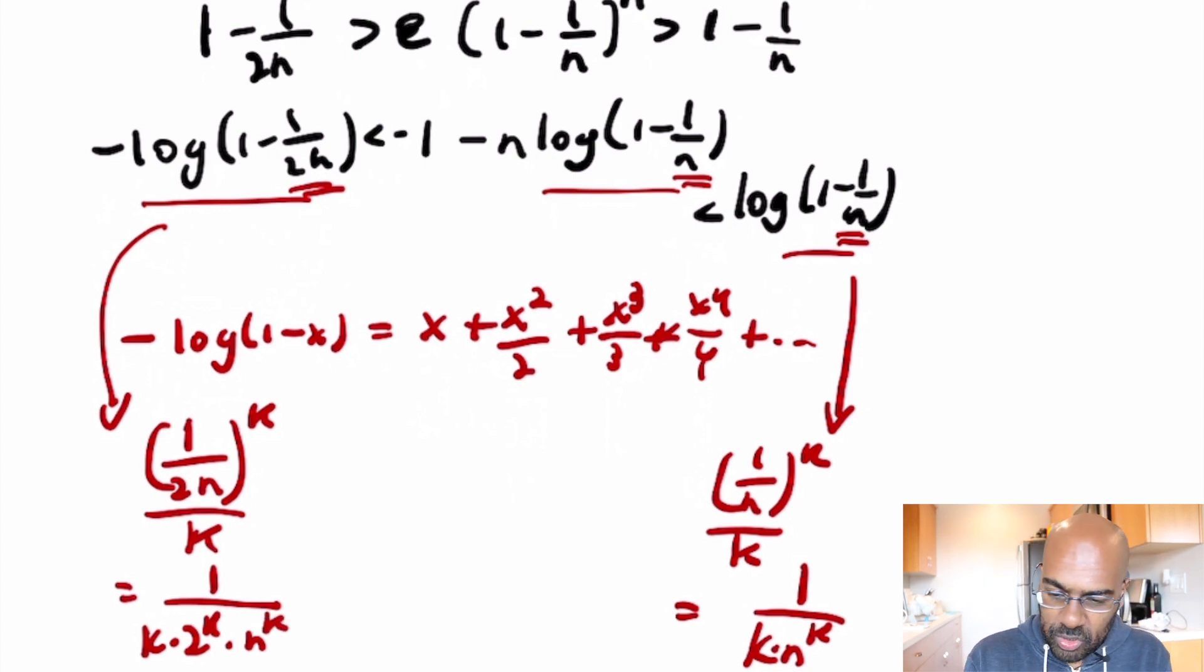And so we already see that this term on the left is less than this term here on the right, because for any positive value of k, k times 2 to the k is greater than k. So when we have that in the denominator we'll get the inequality in the other direction. So the question is what's going on with this middle term?